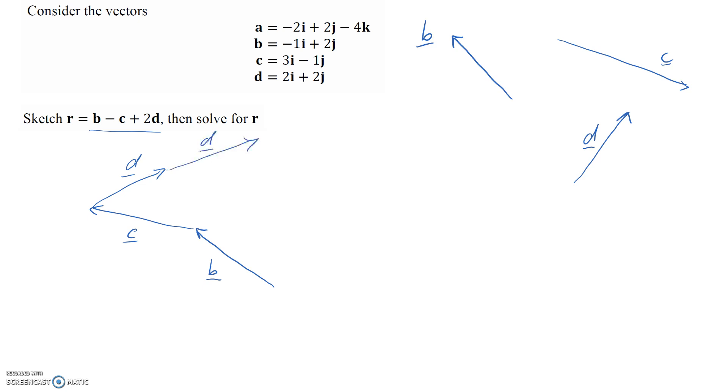It's just a sketch, not completely accurate, but we can join from the very beginning to where all the additions end up at the very end. That is going to be the vector r, because that's all of them added together.